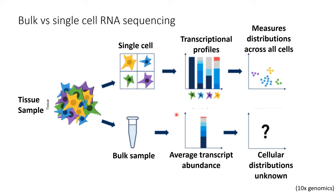Another advantage of single cell mRNA sequencing is that by sampling mRNA counts with single cell resolution, we recover information about the manifold — the shape or topology of gene expression space that exists in individual cells. This is really exciting and can potentially lead to interesting questions about the dynamics of gene expression and cell identity transitions.